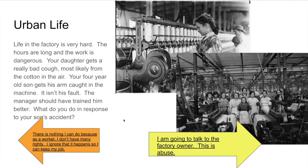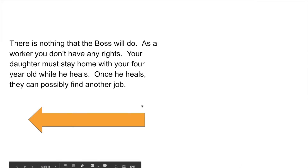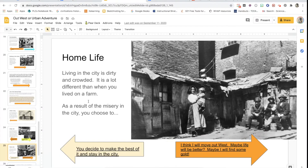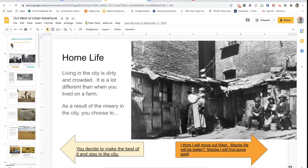Then they have a choice of a circumstance that happened, and then what are they going to do to make that choice. It continues to walk them through the adventure and eventually they will get to the end of their urban adventure. Some of them will choose to go out west, some will choose to stay in the city, and as they're doing that they'll be learning about those different options. I had them fill out notes and reflection questions just to prove that they had done this and ask them about the historical aspects of their adventure to show what they learned.